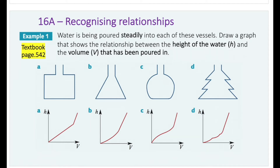Now let's look at a question. It says water is being poured steadily into each of these vessels. Draw a graph that shows the relationship between the height of the water h and the volume that has been poured in. The diagrams have v on the x-axis representing the volume of water poured into the vessels, and h on the y-axis representing the height of water. Clearly, as the volume in the vessels increases the water level also increases.